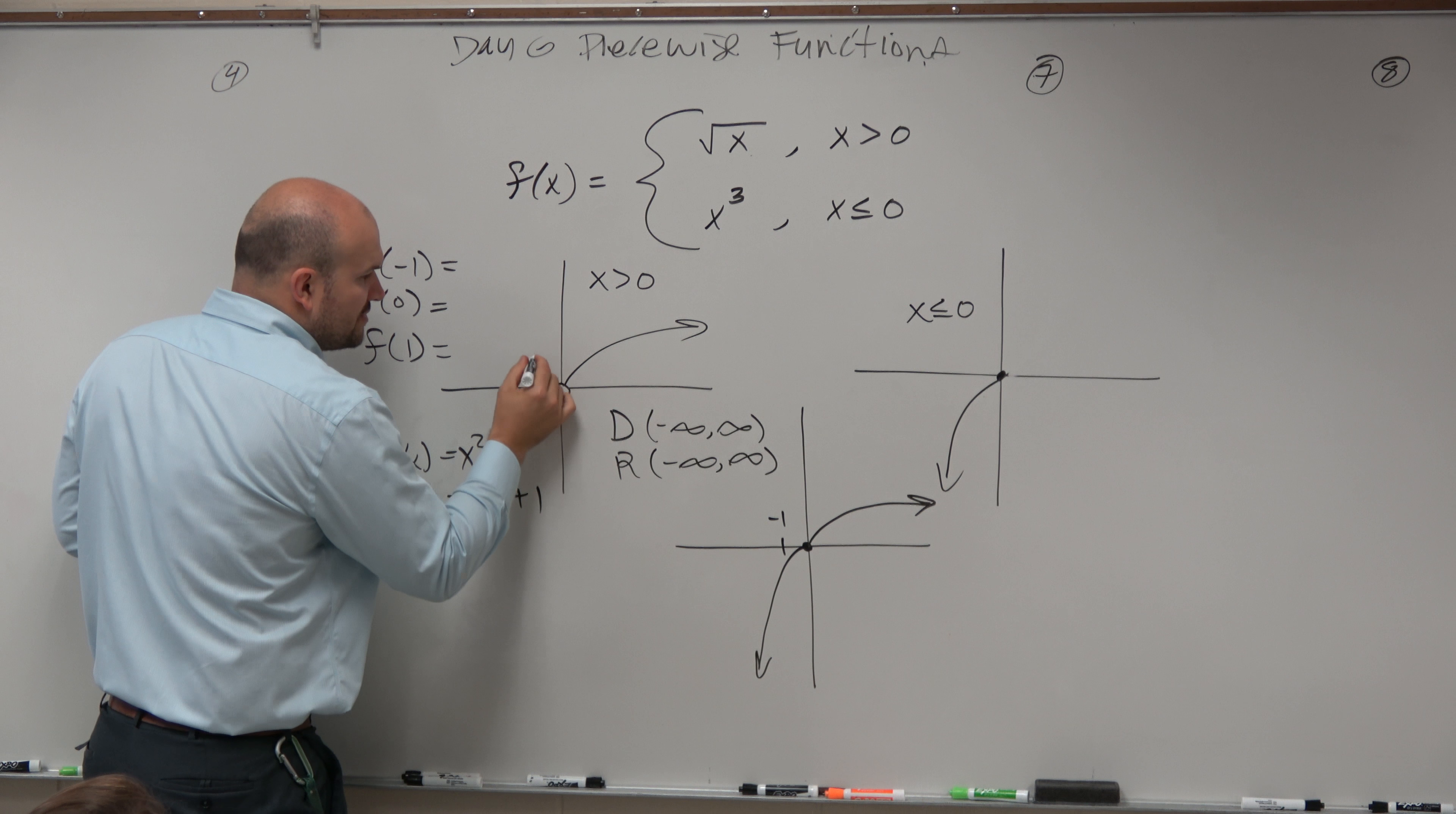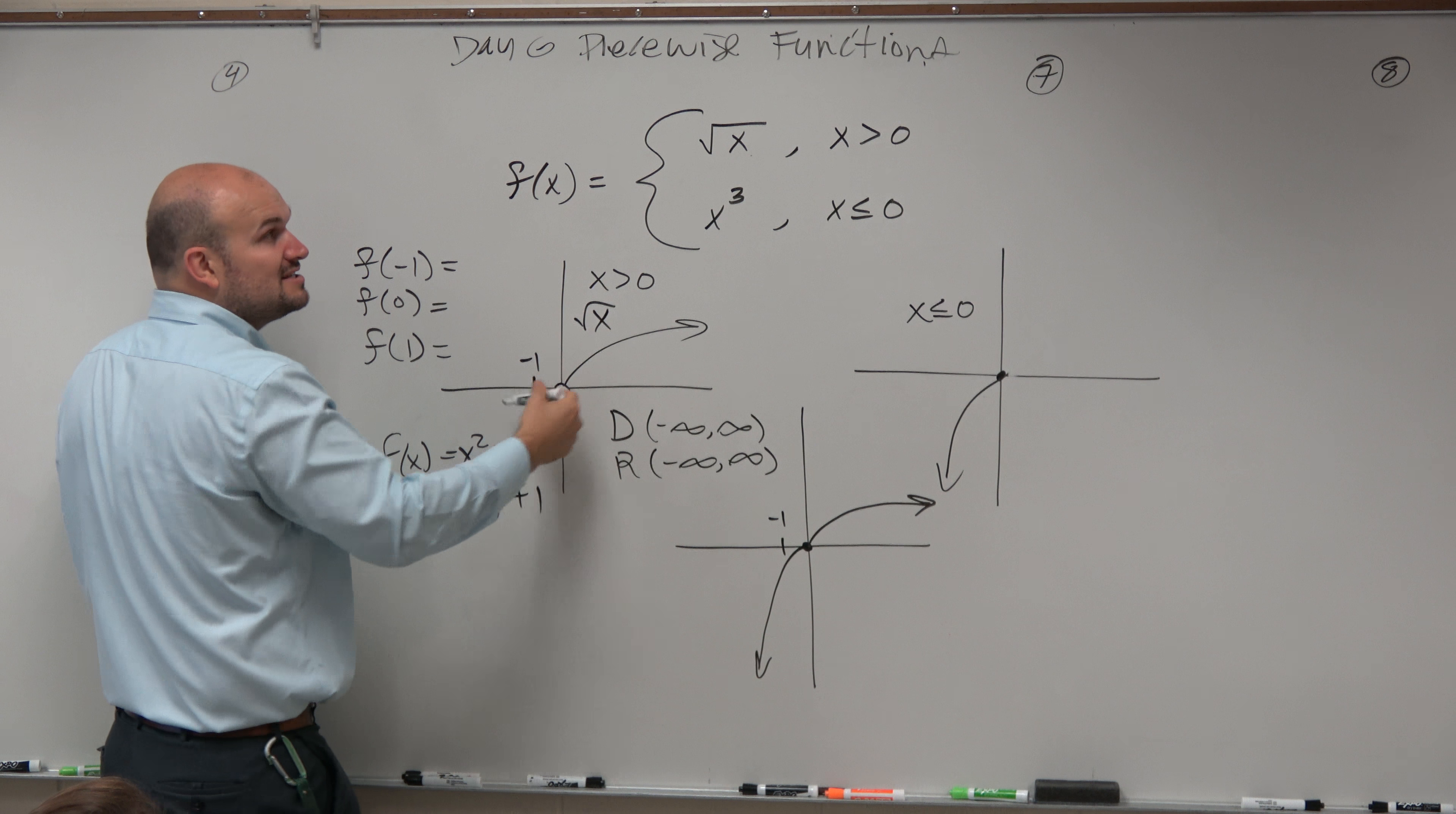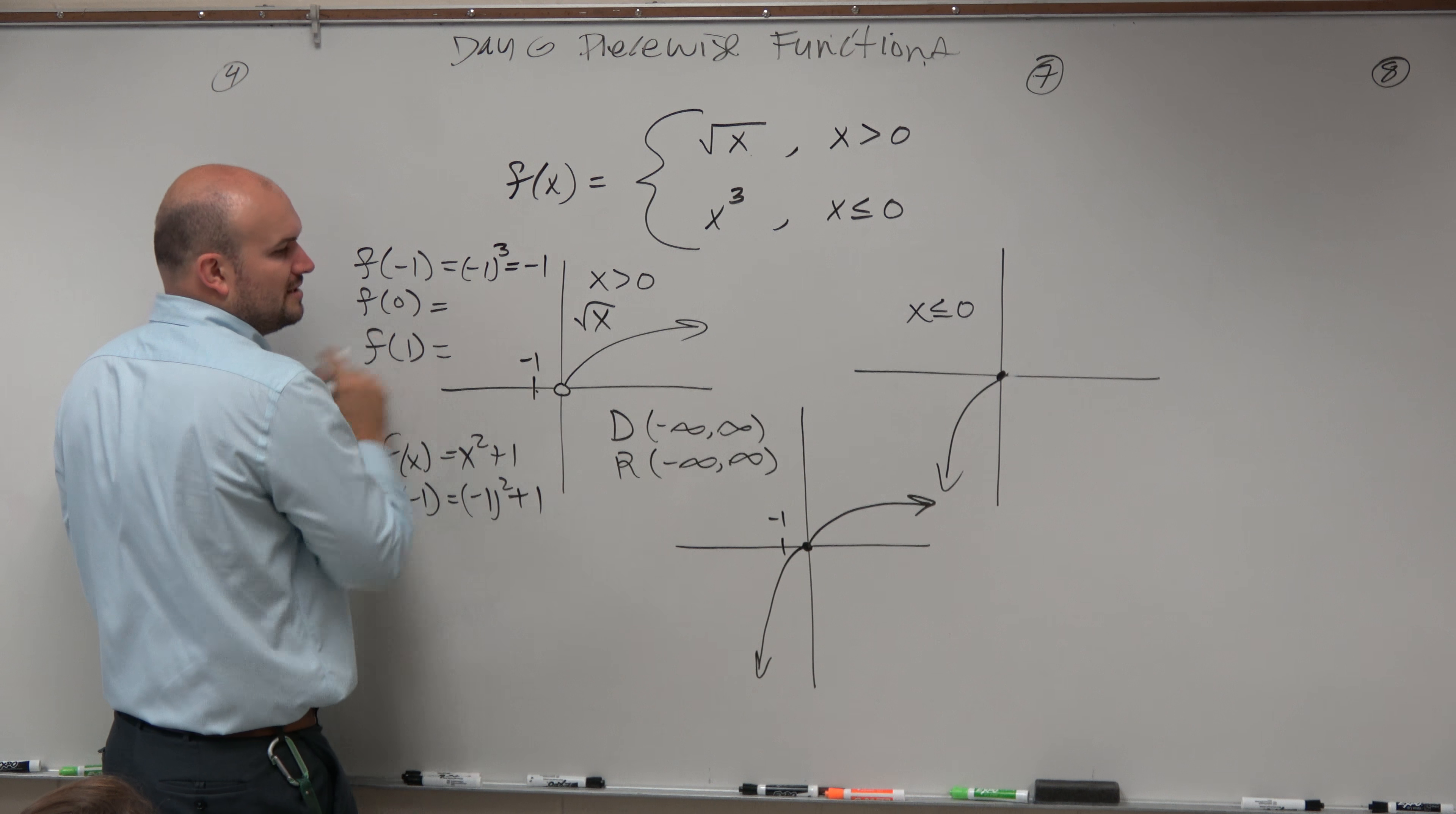Look over where negative 1 is over here. There is no value for the square root of x. There's no value over here. So it makes no sense to plug in negative 1 into the square root of x. So when I do f of negative 1, I'm just going to put negative 1 into the cube equation, which gives me negative 1.